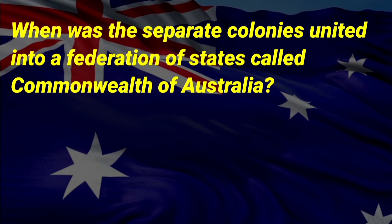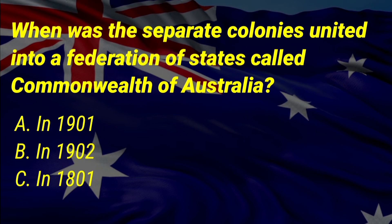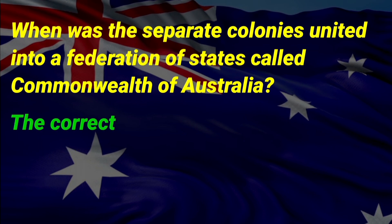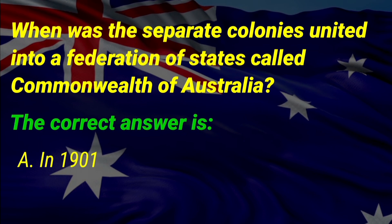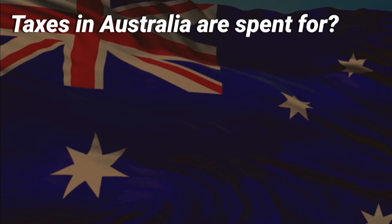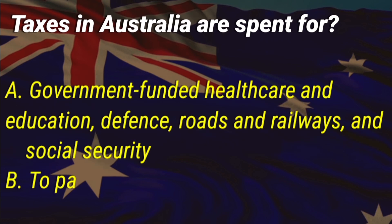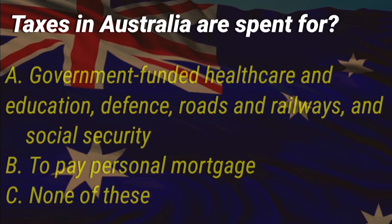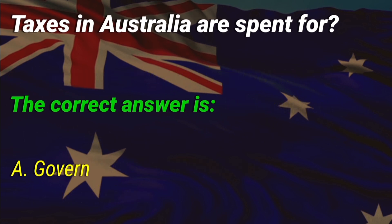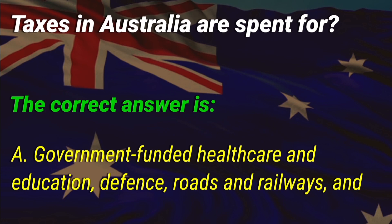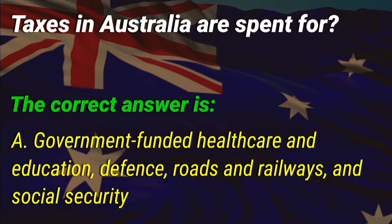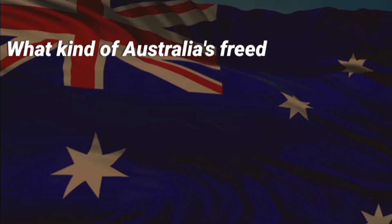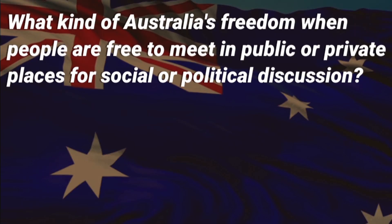When were the separate colonies united into a federation of states called the Commonwealth of Australia? A: in 1901, B: in 1902, C: in 1801. The correct answer is A, in 1901. Taxes in Australia are spent for what? A: government-funded health care and education, defense, roads and railways and social security, B: to pay personal mortgages, C: none of these. The correct answer is A.